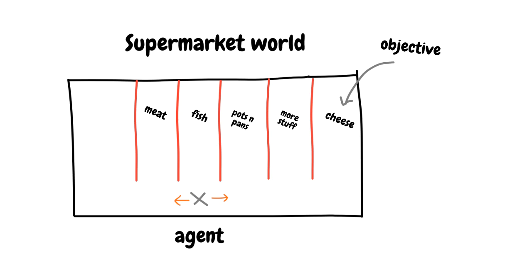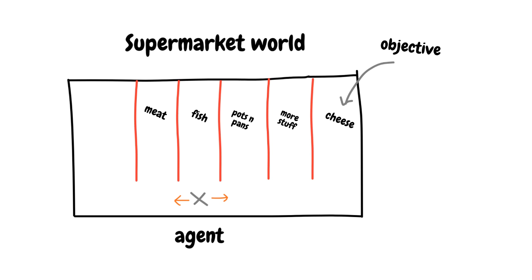If not in the first iteration, the agent might eventually get stuck checking the same aisles over and over again. So what happened here? When the agent moved to the fish aisle, it didn't actually seem closer to the cheese, so there was no defined positive reward. But we know intuitively it makes sense for an agent to continue exploration instead of going back to what it has previously seen.